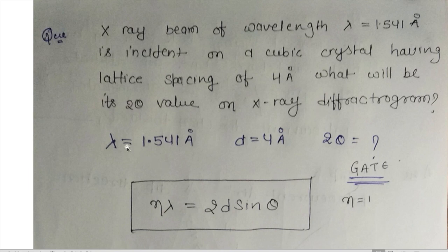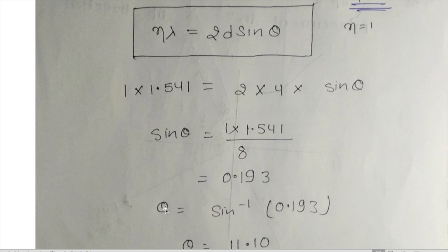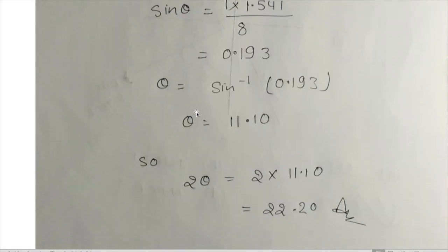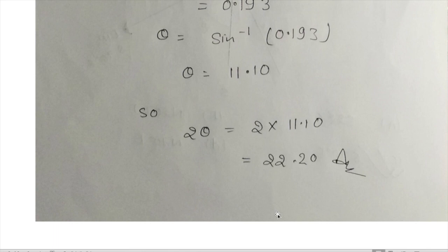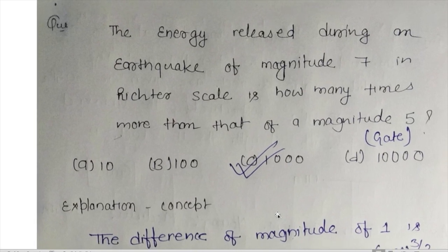Given: lambda = 1.541 Angstroms, d = 4 Angstroms (lattice spacing), and n = 1. We first find theta and then multiply by 2. Putting the values into the formula gives sin(theta) = 0.193, so theta = 11.20 degrees. Since we need 2-theta, multiplying by 2 gives the answer: 22.40 degrees.